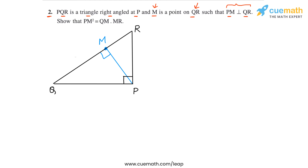We have to show that PM² is equal to QM × MR. PM is this perpendicular, so the square of this perpendicular must equal QM (this segment) times MR (this segment). To show this equality, we will use the fact that two triangles in this figure are similar.